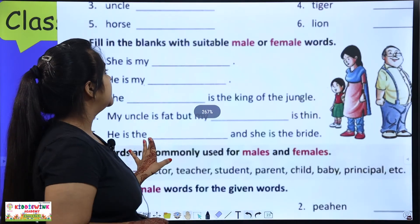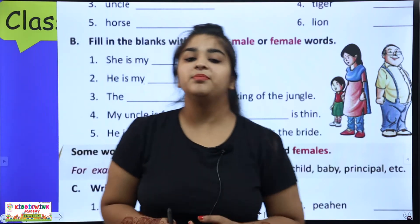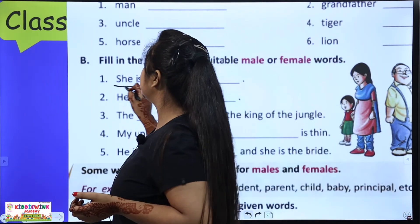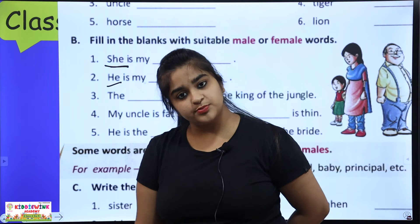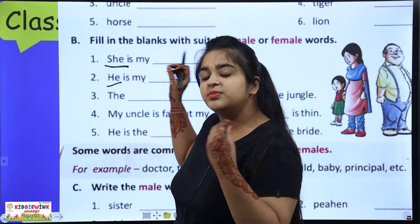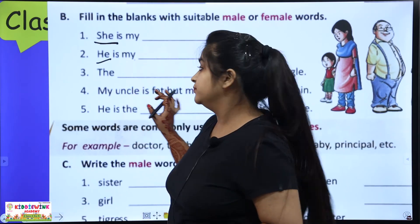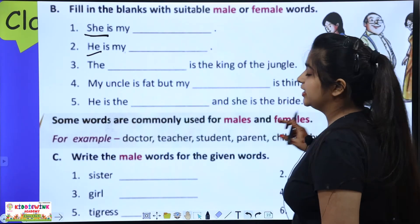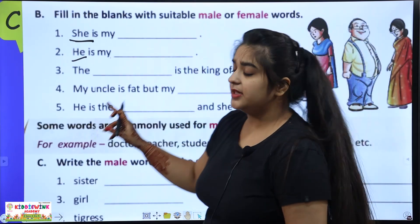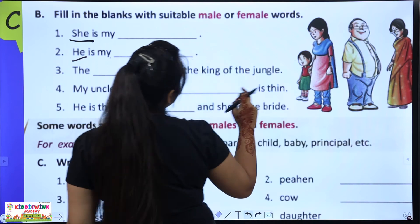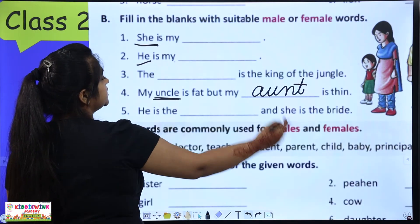Second exercise: fill in the blanks with suitable male or female words. Read the sentences and tell whether male or female will come. She is mine — grandmother, mother, sister — you can write anything. He is my father, brother, uncle — you can write anything. The dash is the king of the jungle — lion. My uncle is fat but my dash is thin — aunt. How do you know aunt will come? Because what is uncle's opposite? Aunt. Clear?